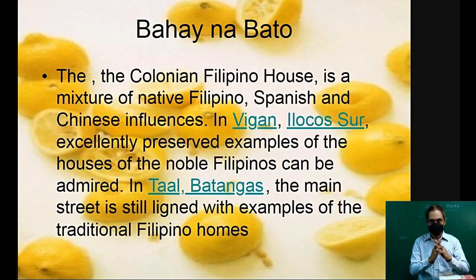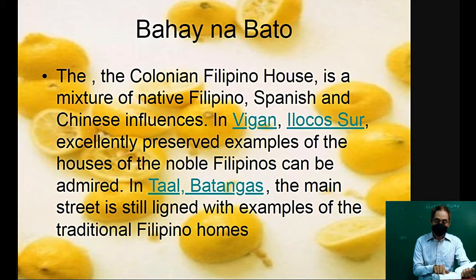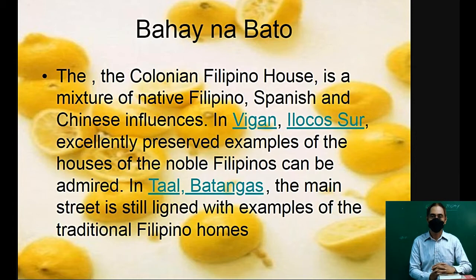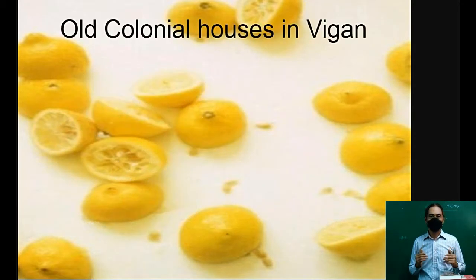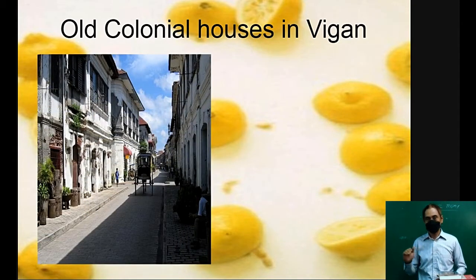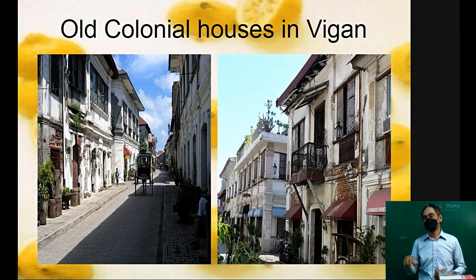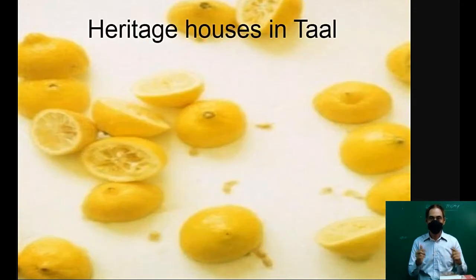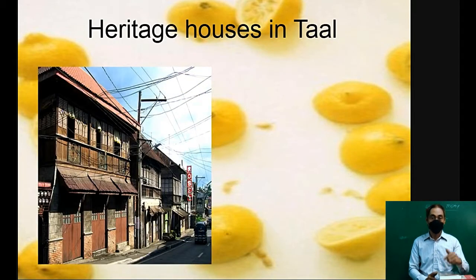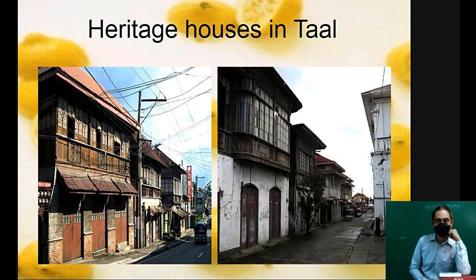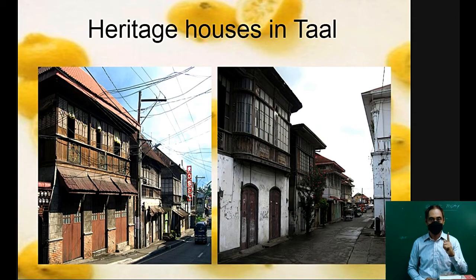The bahay na bato — the colonial Filipino house — is a mixture of native Filipino, Spanish, and Chinese influences. In Vigan, Ilocos Sur, excellently preserved examples of the houses of the noble Filipinos can be admired, and also in Taal, Batangas, where the main street is still lined with examples of traditional Philippine homes. These are the houses in Vigan — until today they are being preserved and used. These are called Vigan houses in history books. Here is the heritage house in Taal, still existing today.